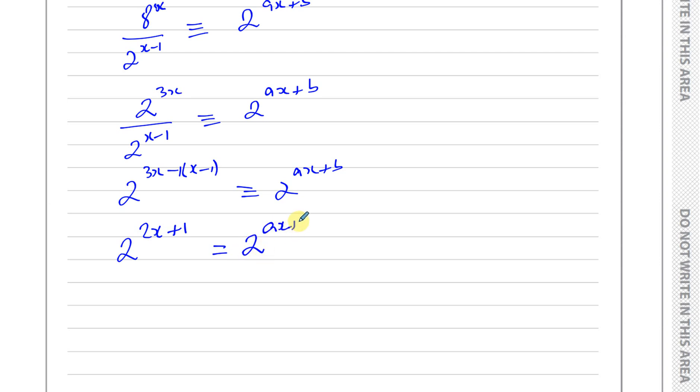That means 2X plus 1 must be identical to aX plus b. We can compare the coefficients here: a must be 2 and b must be 1. So we found the values of a and b just by comparing the coefficients. That's the answer to part A.